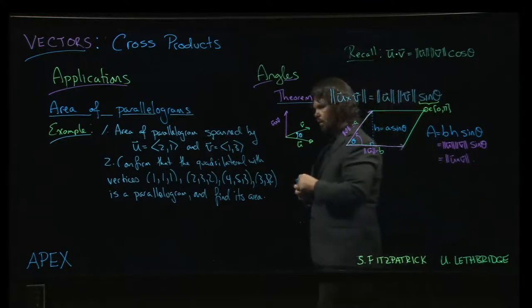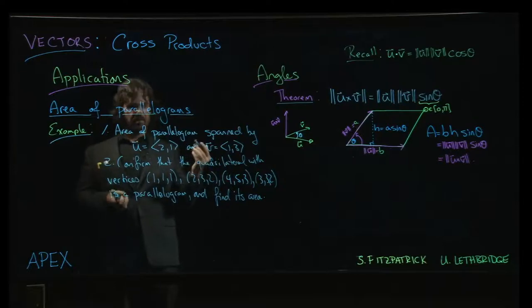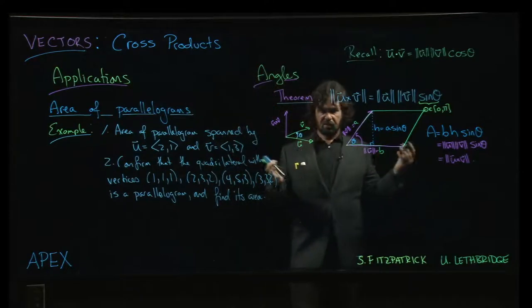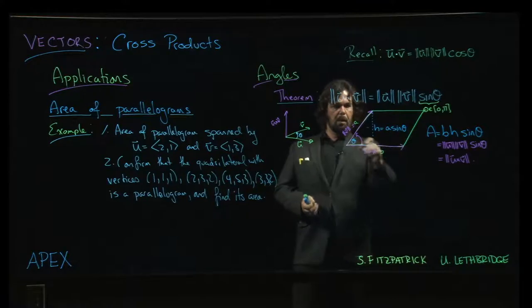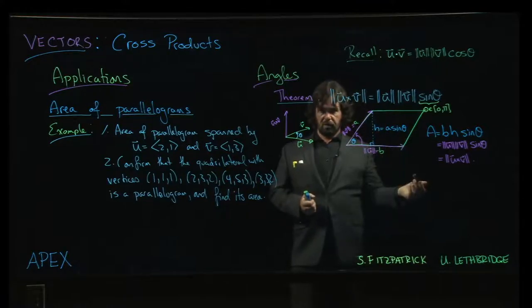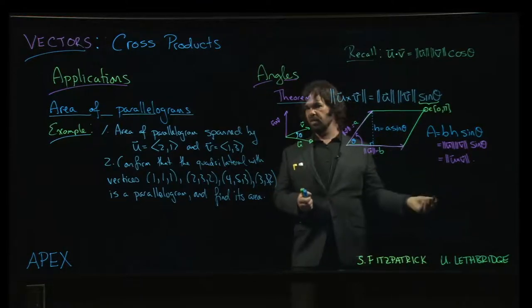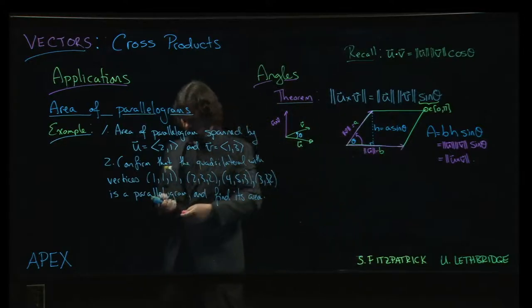In situations where you can't necessarily figure out the angle between those two sides of your parallelogram easily—and one situation where that's going to come up is if your parallelogram is actually sitting out in three-dimensional space somewhere—if you can come up with these two vectors that give you two of the four sides of your parallelogram, you can compute the cross product, find the magnitude, and you've got your area. You never even need to know what the angle is.